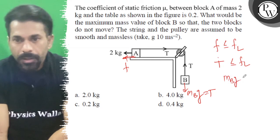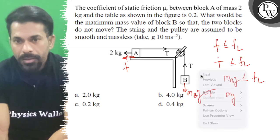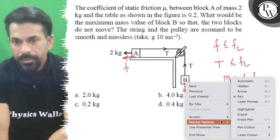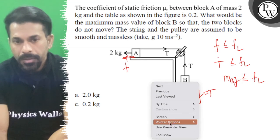So, MB*G less than or equal to limiting friction. MB*G... I will tell you this. Here we go.